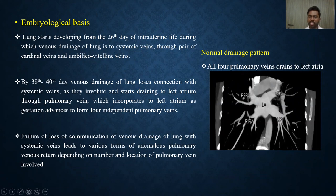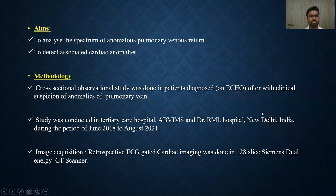This is the coronal reformatted CT image showing the normal pulmonary venous drainage pattern, in which the four independent pulmonary veins are draining into the left atrium. The aim of our study was to analyze the anomalous pulmonary venous return spectrum and to detect the associated cardiac anomalies.